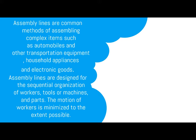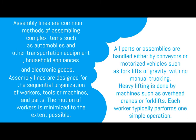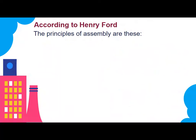Assembly lines are designed for the sequential organization of workers, tools or machines, and parts. The motion of workers is minimized to the extent possible. All parts or assemblies are handled either by conveyor or motorized vehicles such as forklifts or gravity, with no manual tracking. Heavy lifting is done by machines such as overhead cranes or forklifts.